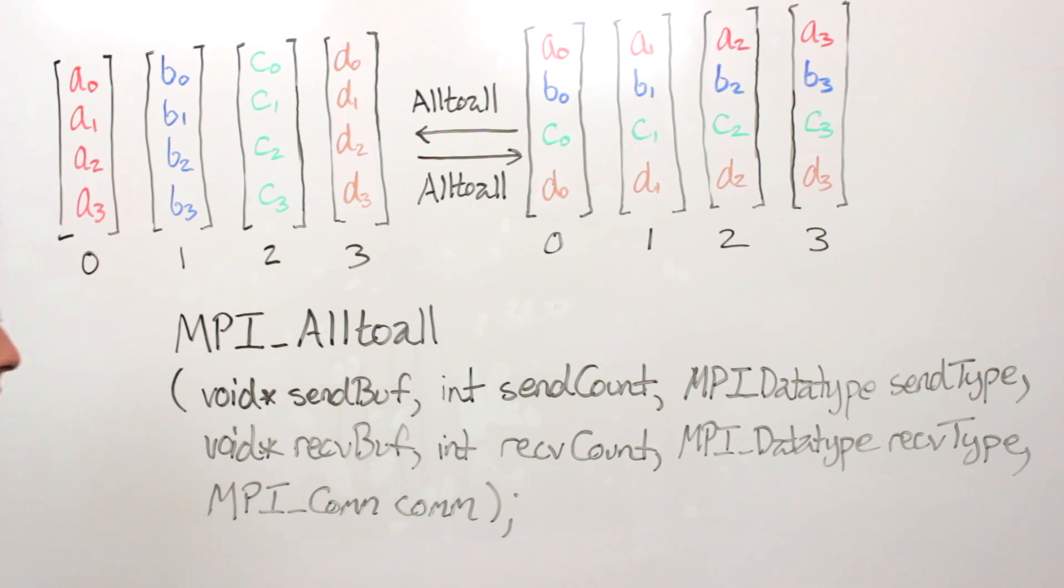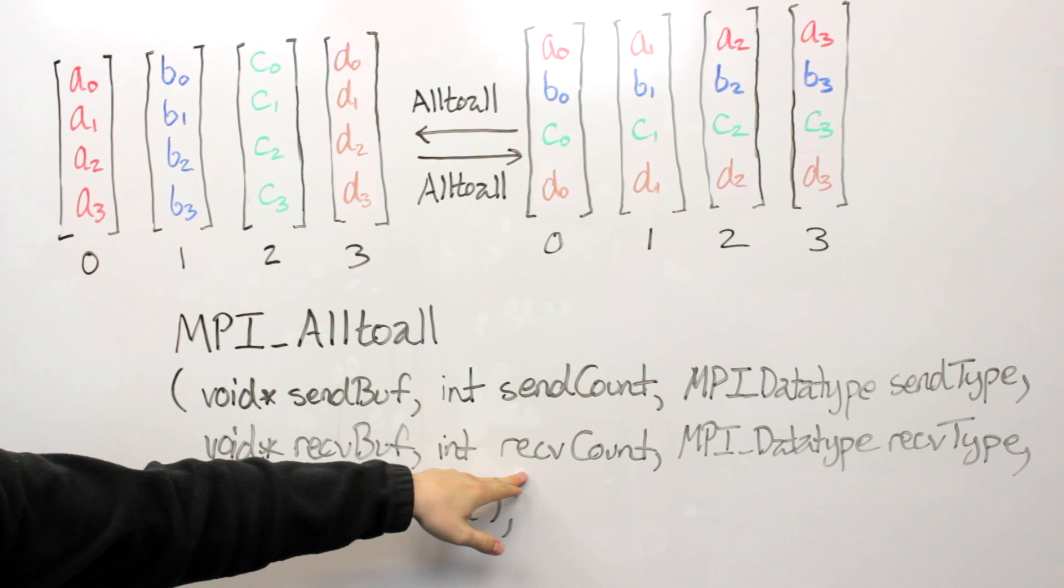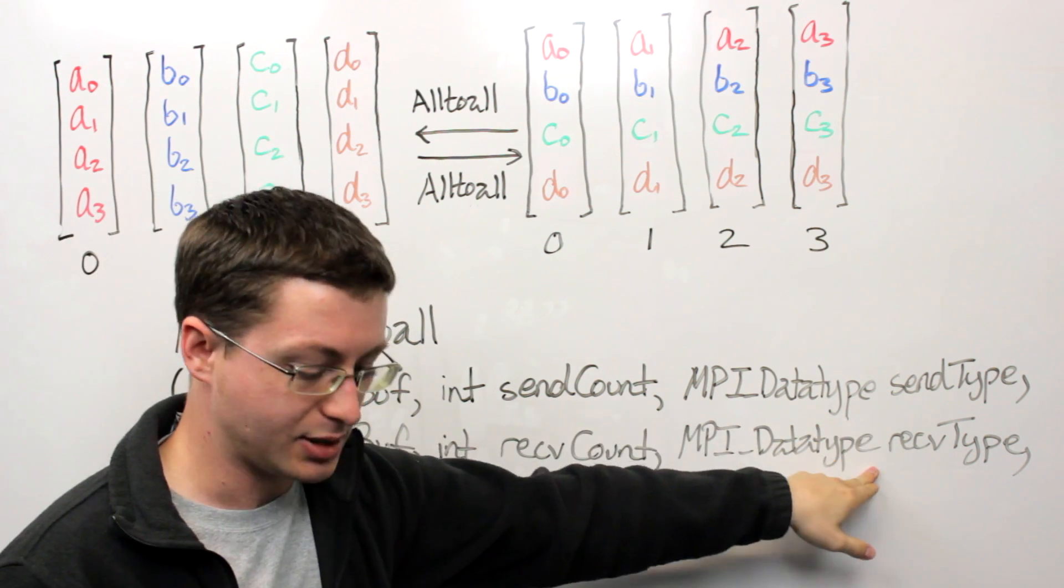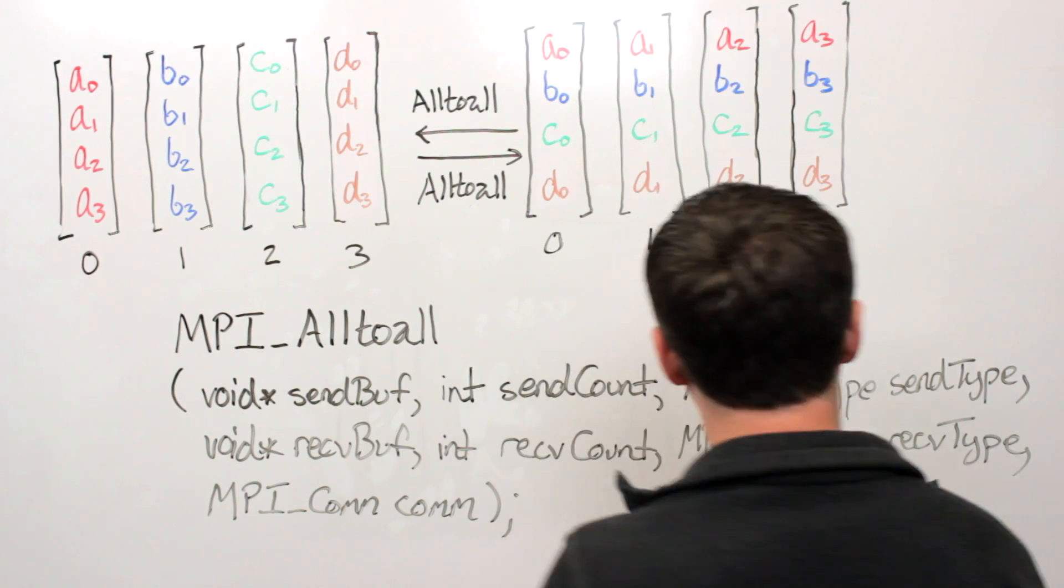So in the case we just described, the send count and the receive count would both be 16, and then the send type and the receive type might be MPI double.